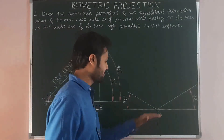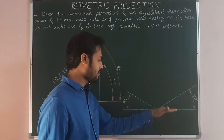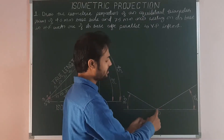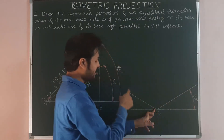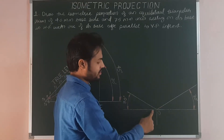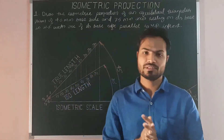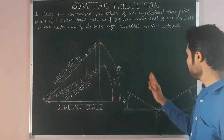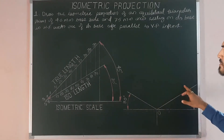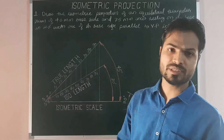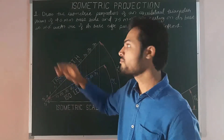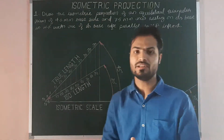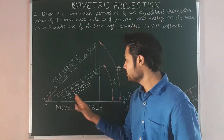Moving to the construction part. Draw the set of isometric axes starting from the first line parallel to the bottom base of your sheet. Mark O as the reference or origin point. The first iso-axis is inclined at 30°, the second iso-axis is again inclined at 30°, and the third iso-axis is perpendicular to the line. Since the solid is resting on its base on HP, we need to draw the isometric projection starting from the base, which is a triangle. For isometrically projecting a triangle, we need a helping figure. Note that we are drawing isometric projection, so all dimensions are to be taken using isometric scale only.